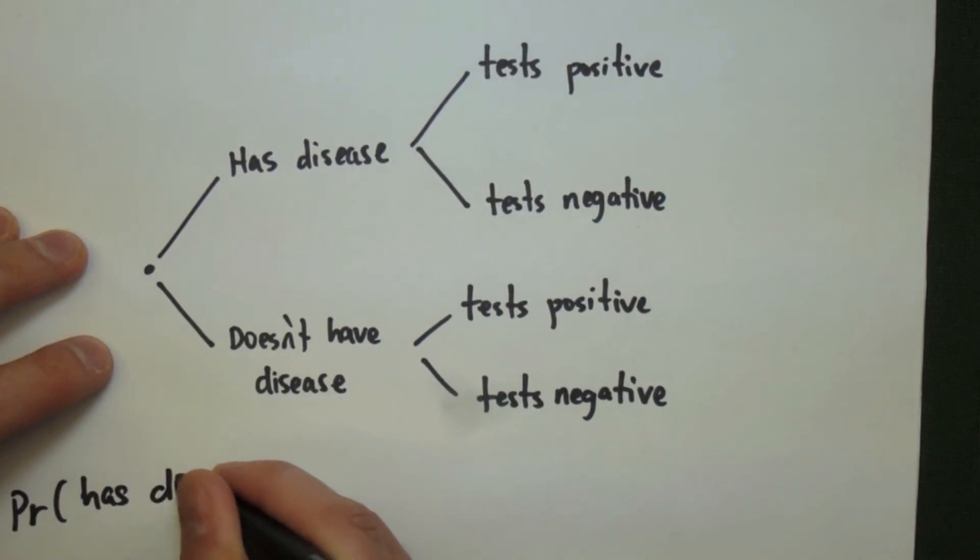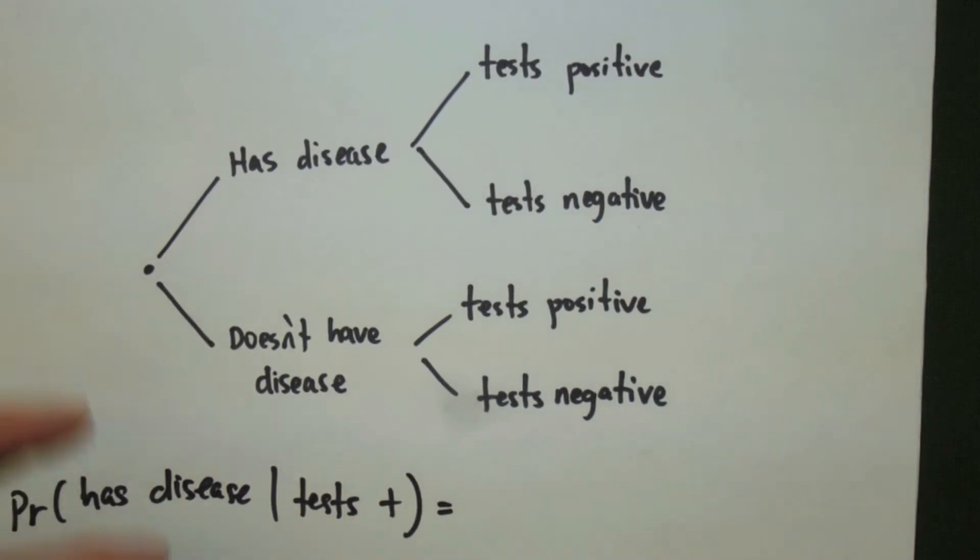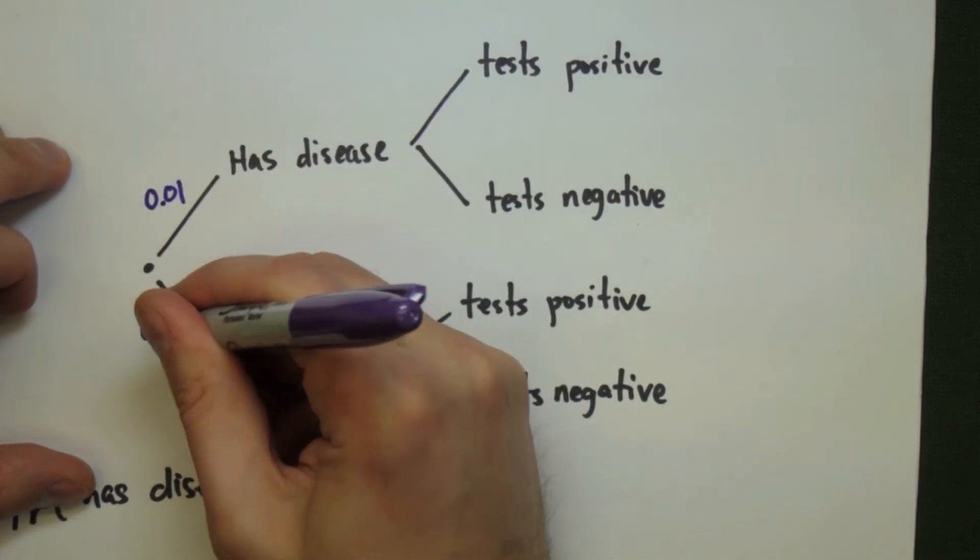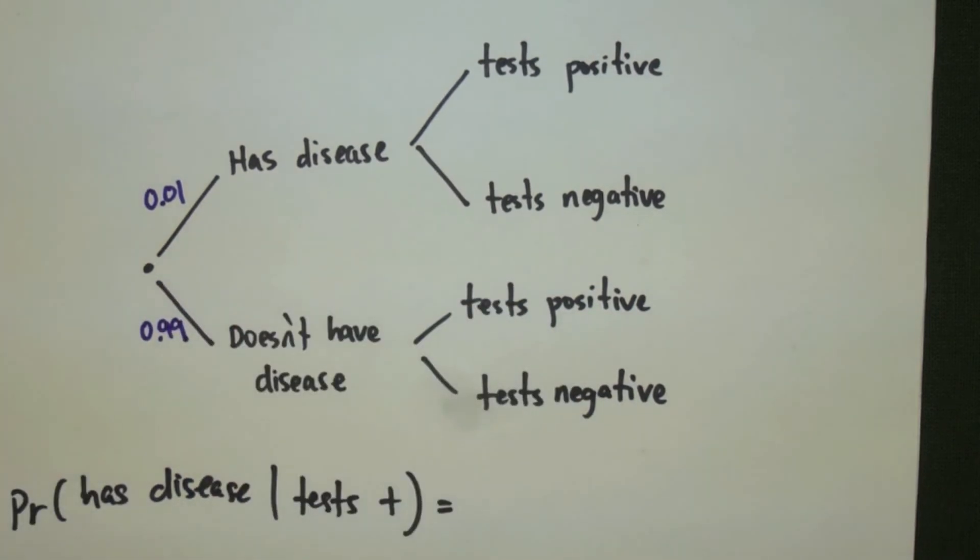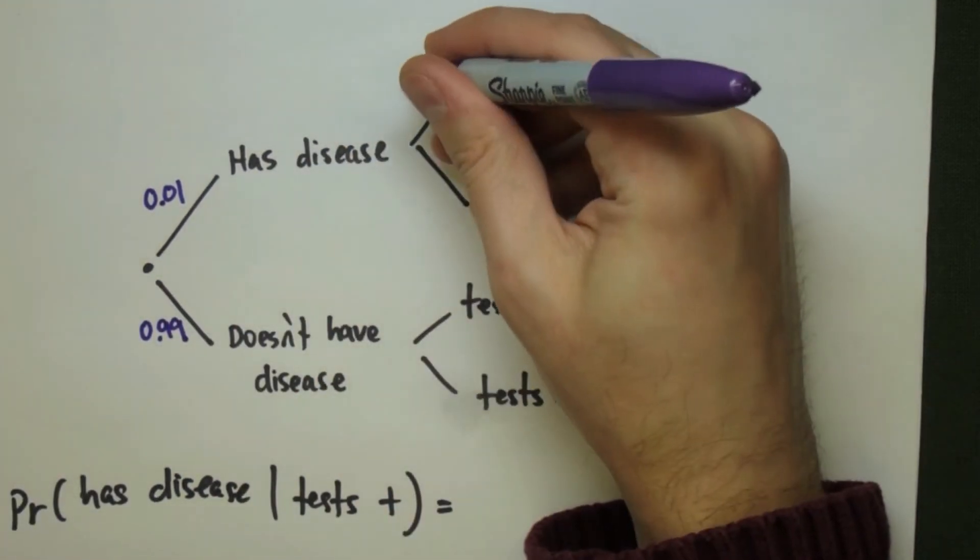With this, we can actually look for the probability that we have the disease given that we test positive by using a similar type of argument as before. We're going to only look at the test positive branches and use the has disease as a numerator. So we fill in the different probabilities. There's a 0.01 chance that we have the disease and a 0.99 chance we don't.